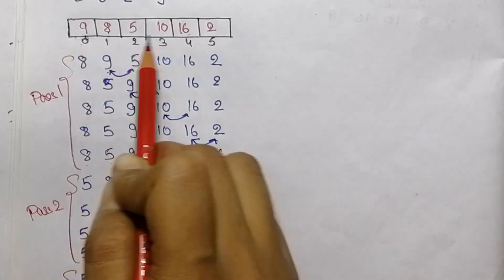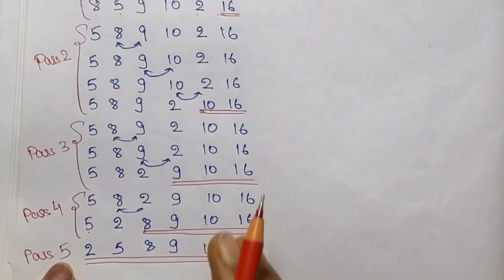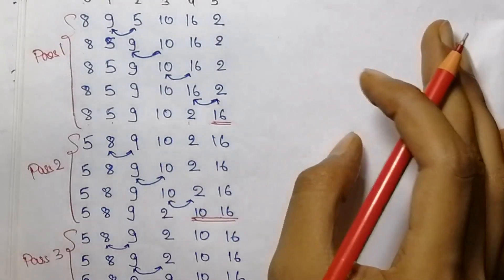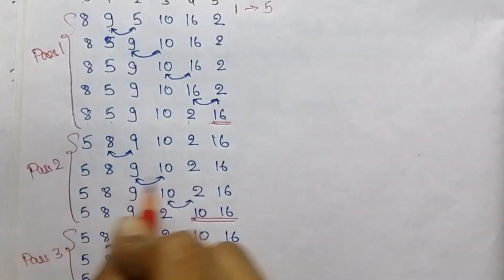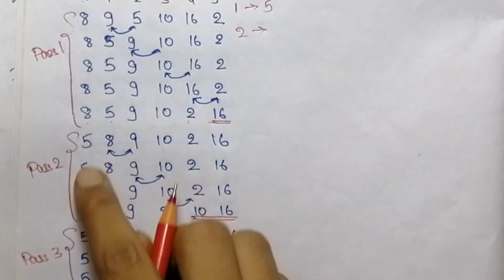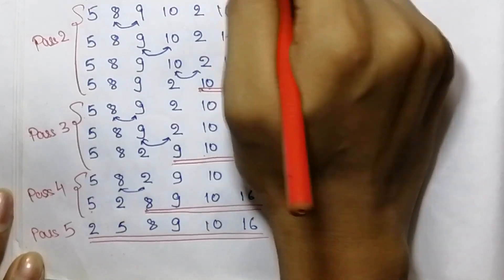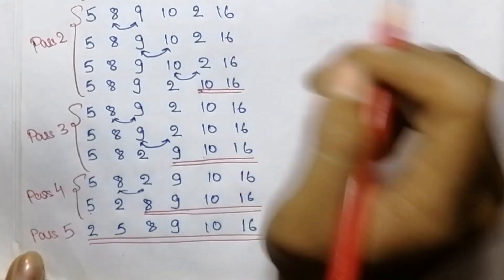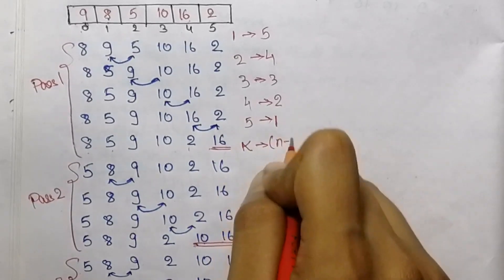See here, there were 6 elements and we needed 5 passes for it. That means the bubble sort algorithm requires n-1 passes to sort an array with n elements. In pass 1 there were 5 steps, in pass 2 there were 4 steps, in pass 3 there were 3 steps, in pass 4 there were 2 steps, and in the 5th pass there was 1 step. So we can see a relation that in the kth pass, there will be n-k steps.